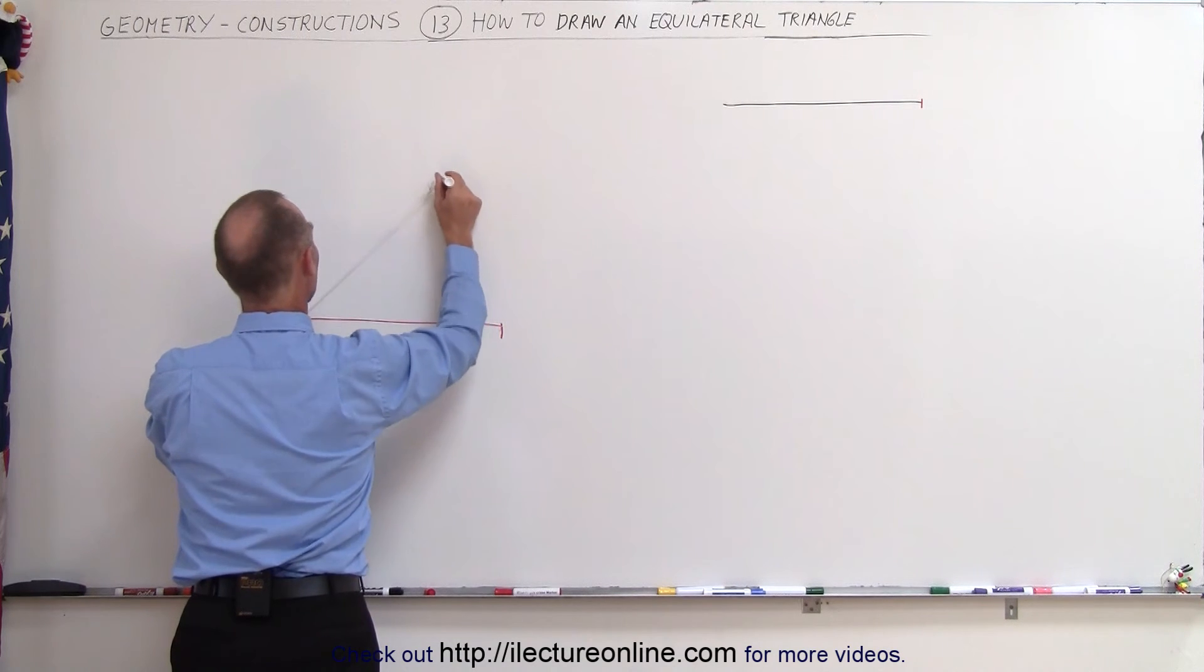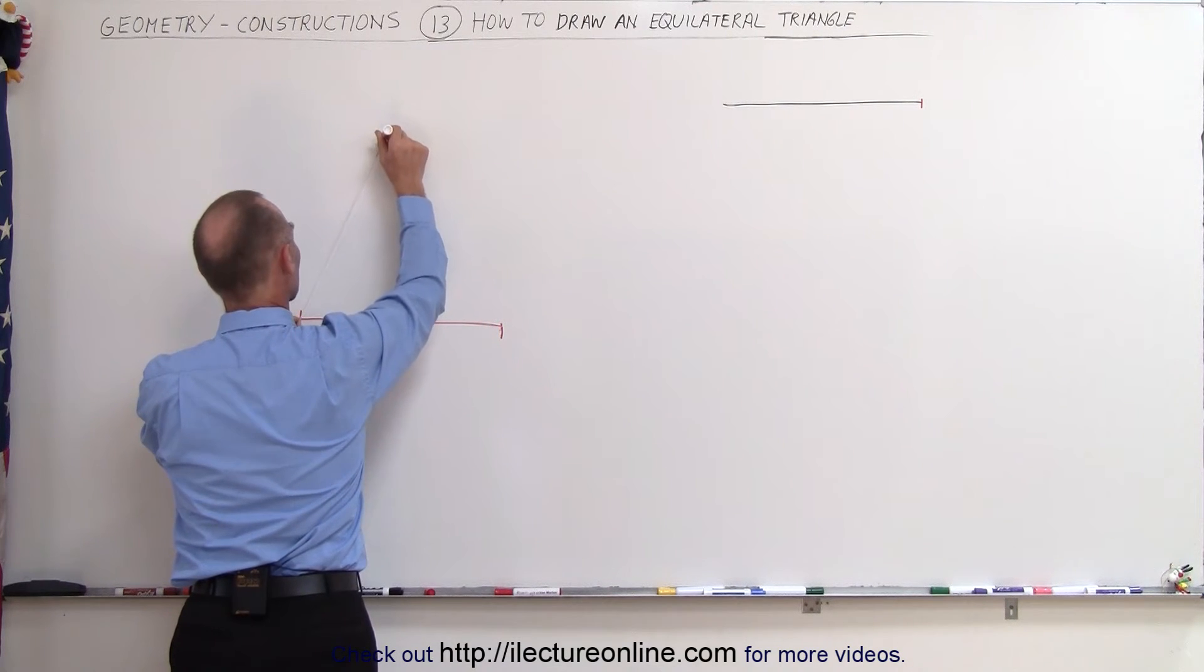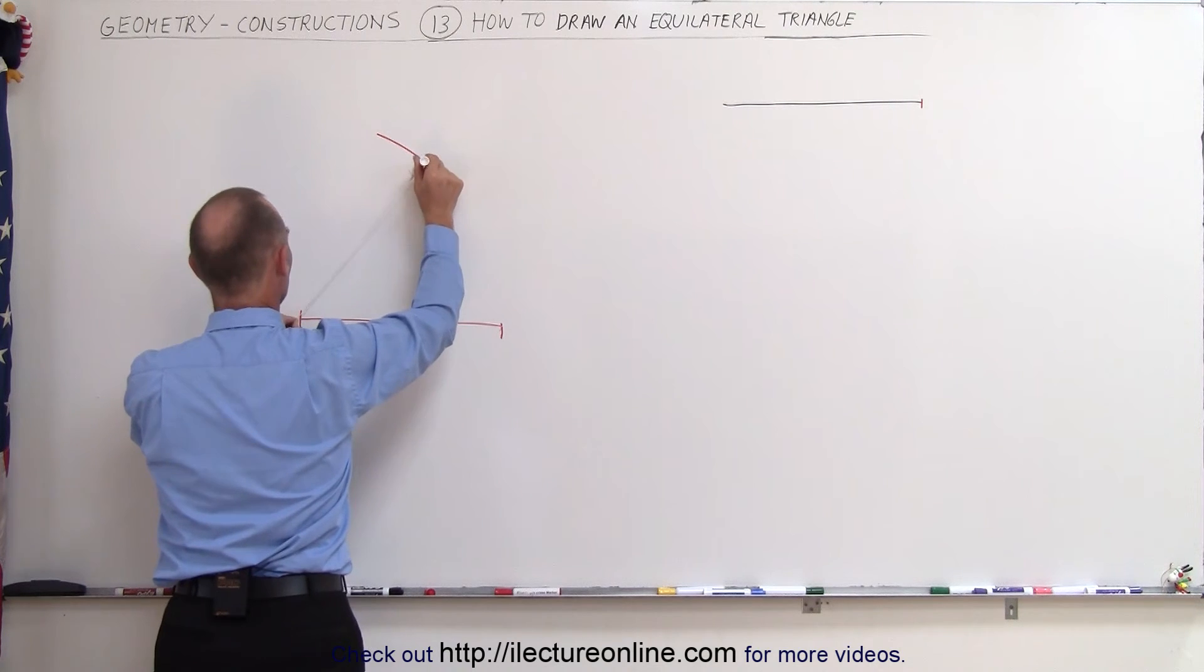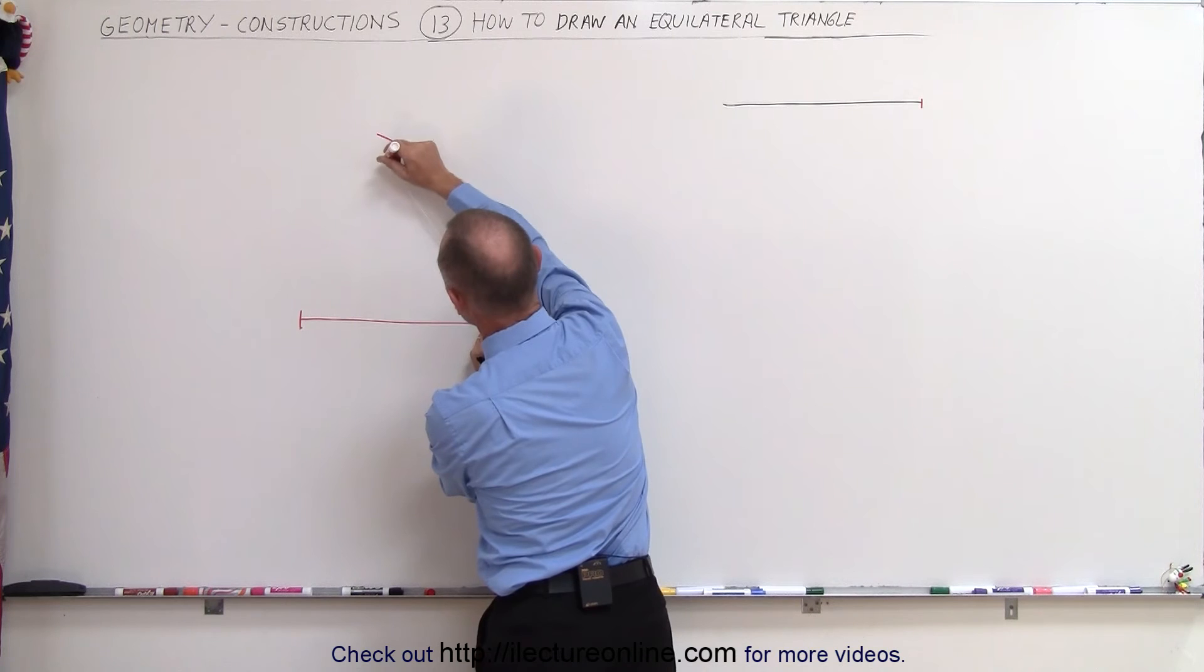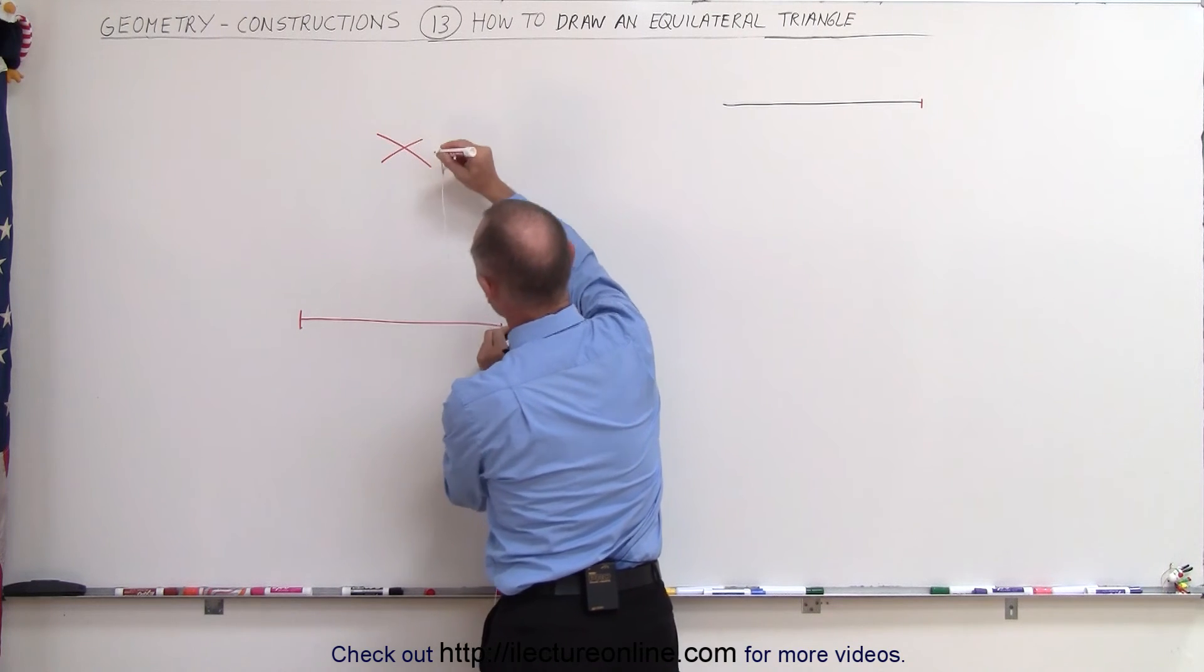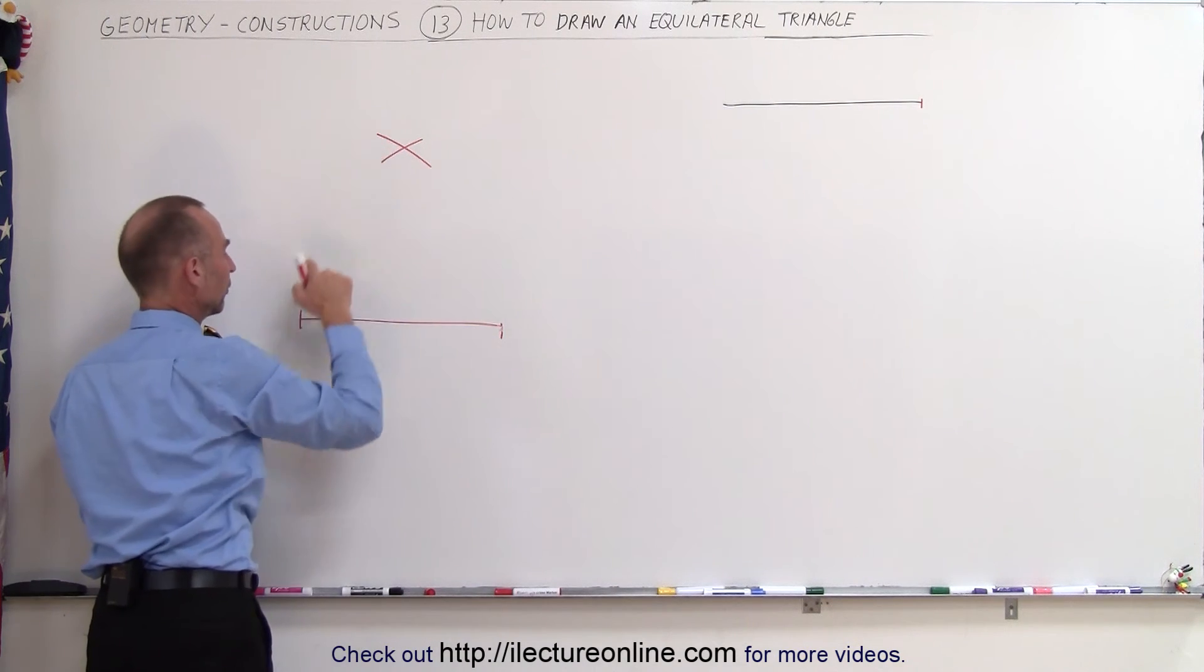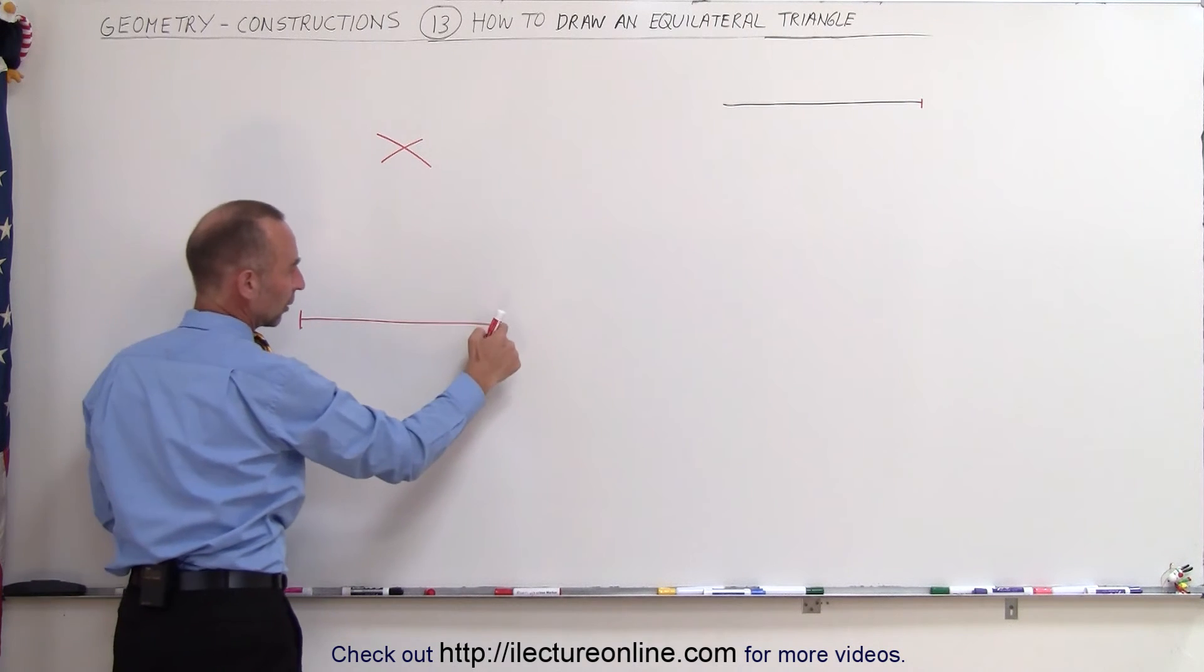Now I want to come up here and make another tick mark, another small arc in this direction, and come over here to the other side and make another arc like this. So where those two lines cross, that would be the third corner of the triangle. This would be one corner, that would be the second corner, that would be the third corner.